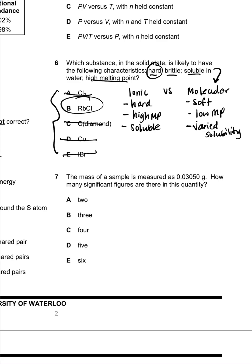So the answer is B, rubidium chloride. That's my ionic compound, bonded by a metal and non-metal ion.